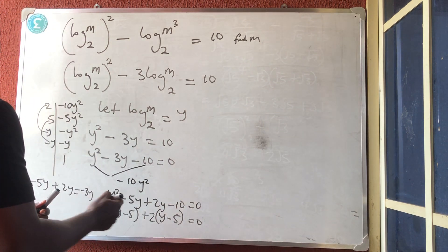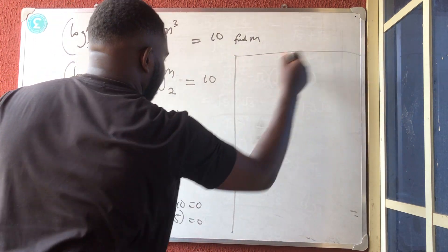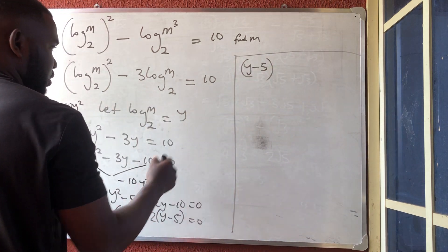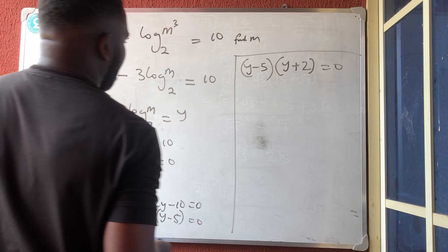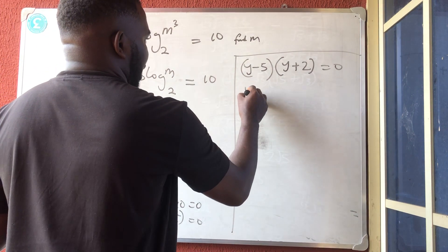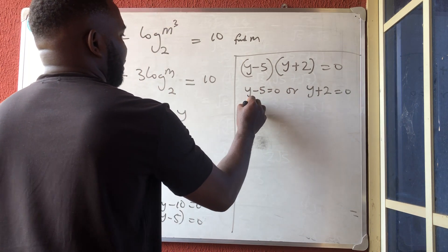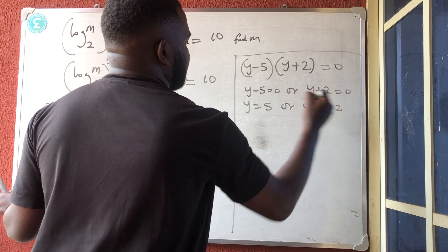So what do I have finally? What is common between this line and this line is y minus 5. And what is remaining is now y plus 2 is equal to 0. So what do we have now? We're now having that y minus 5 is 0 or y plus 2 is 0. So finally, I'm having that y is equal to 5 or y is equal to minus 2.